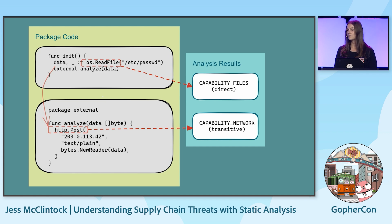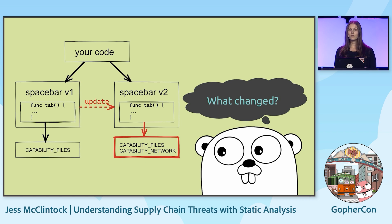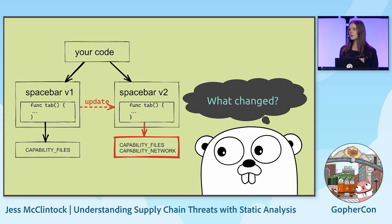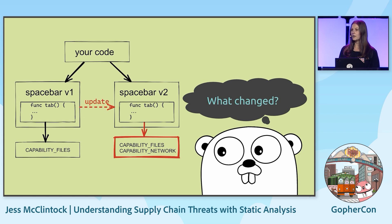This includes external call paths that go through transitive dependencies. So we can say either your library is directly calling a file system type capability, or maybe it has a transitive dependency that ends up using a network type capability. This is quite interesting with transitive dependencies because you're usually using particular functions from those libraries because you expect them to have particular behaviors. So if a version change to that library changes what capabilities it has, somehow the behavior of the function you're using has changed — is it doing something more than you want, or has something gone wrong?